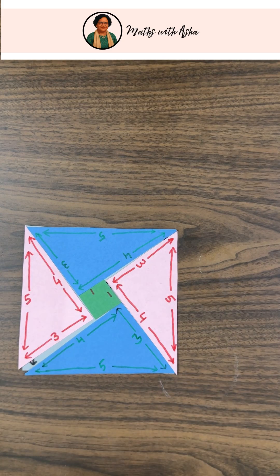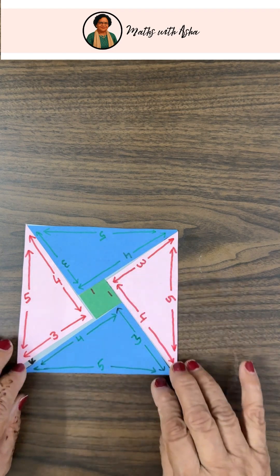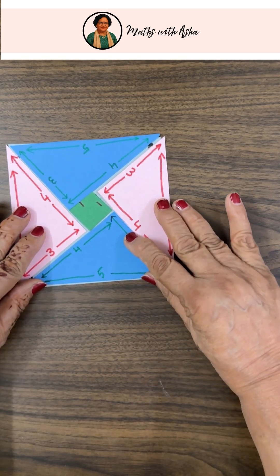What does it mean that 5 square, the area of the square with side 5, is the same as the area of these four triangles and this square of side 1?